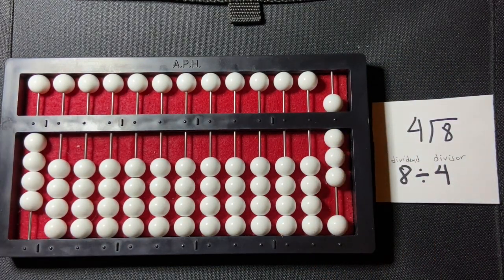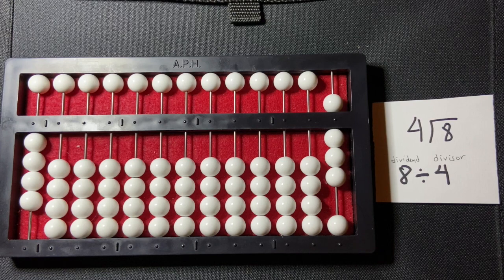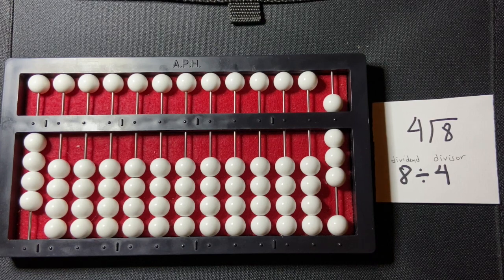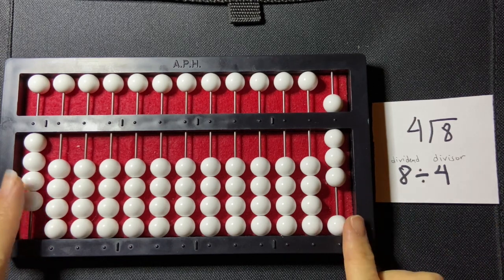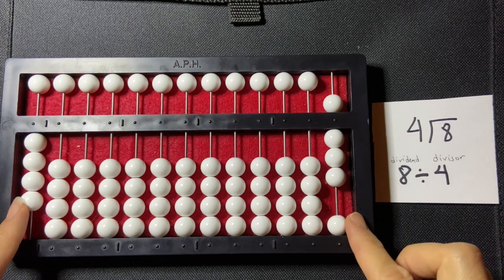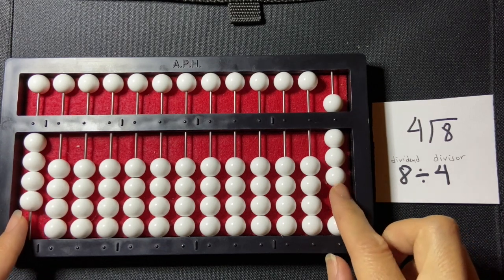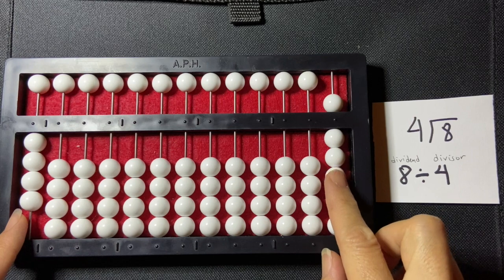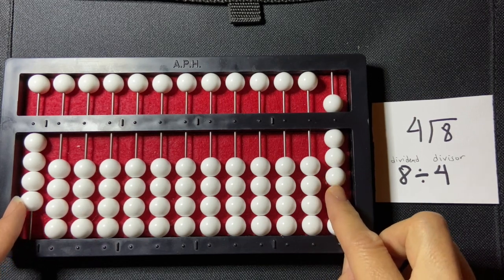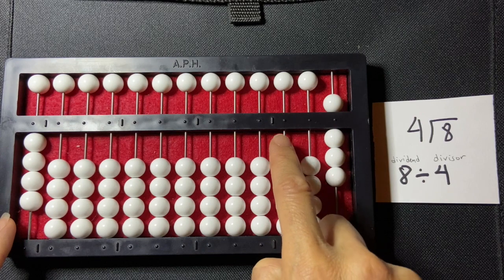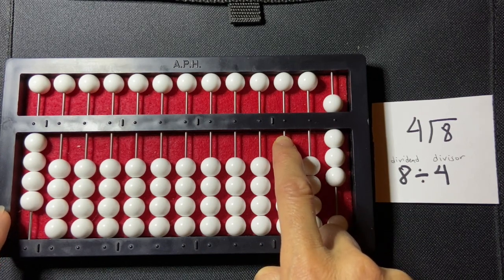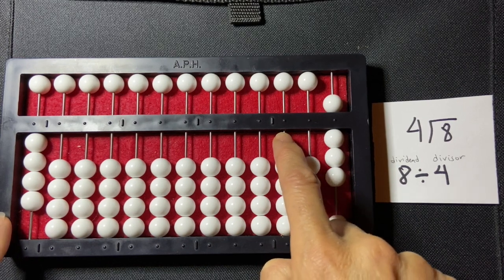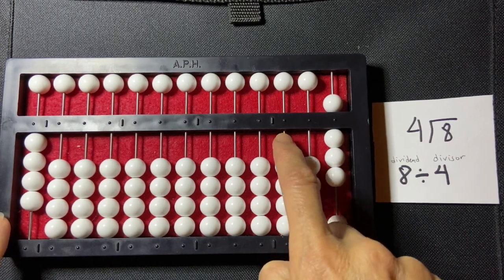Now I have my divisor and my dividend set, and I've got to figure out where I'm going to write my quotient. I'm going to look at the first digit of my divisor and the first digit of my dividend and compare them. If the divisor, which is four in this case, is equal to or smaller than the first digit in the dividend, which in this case is eight, then I'm going to skip one rod and start in the next rod over writing my quotient. So that is the case here, so I'm going to start in my hundreds rod and write my quotient from there.